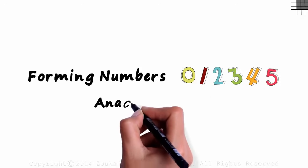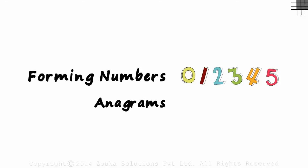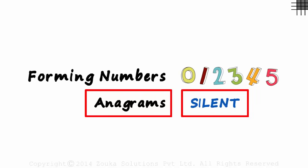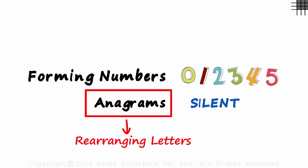Next, we might be asked to form anagrams. Here, we will be given a word, a word like silent, and asked for the number of anagrams we can form with these six letters. An anagram of a word can be formed by simply rearranging its letters.